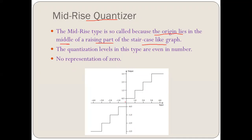Looking at this graph, the x-axis is the input and the y-axis is the output — the reconstruction values. You can see the graph is rising from 0.5, not from 0. On the negative side, it rises from minus 0.5, not from 0. So the origin lies in the middle of the rising part, not at the 0 point. That is why it is called mid-rise — the rise starts from the midpoint.